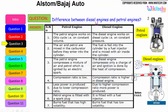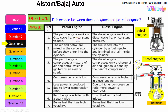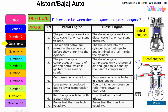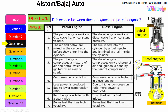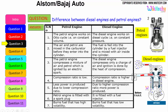Let us see the difference between the diesel engine and the petrol engine. The petrol engine works on the Otto cycle, therefore on constant volume, whereas the diesel engine works on the diesel cycle, on constant pressure. The air and petrol are mixed in the carburetor before they enter into the cylinder, whereas in the diesel engine, fuel is fed into the cylinder by a fuel injector and is mixed with air inside the cylinder.